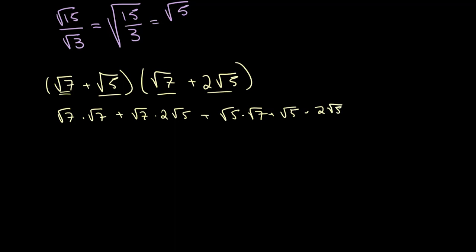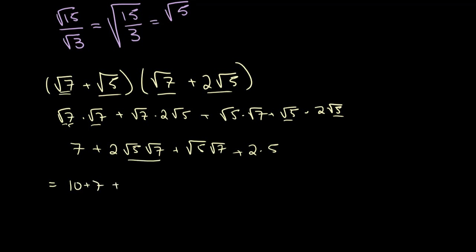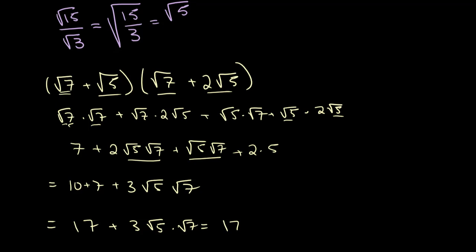We know that any root times itself equals the number inside. So root 7 times root 7 gives 7, root 5 times 2 root 5 gives 2 times 5 which is 10. Collecting like terms, we get 7 plus 10 plus 3 root 35, which simplifies to 17 plus 3 root 35. Note that we always write the whole number before the surd — that's standard notation.